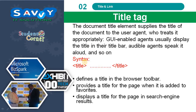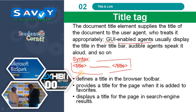Title tag: the document title element supplies the title of the document to the user agent, who treats it appropriately. GUI-enabled agents usually display the title in their title bar, and audible agents speak it aloud. The syntax is: <title>text</title>. It defines a title in a web browser toolbar, provides a title for the page when added to favorites, and displays a title in search engine results.